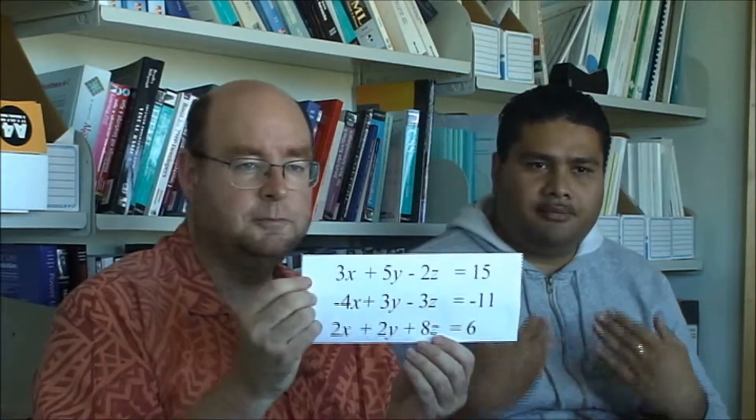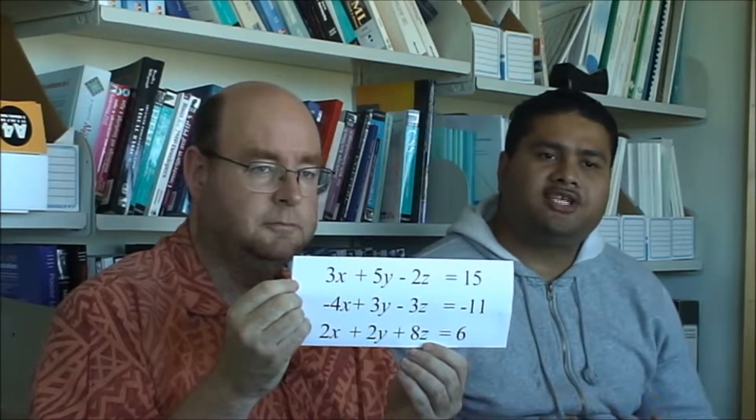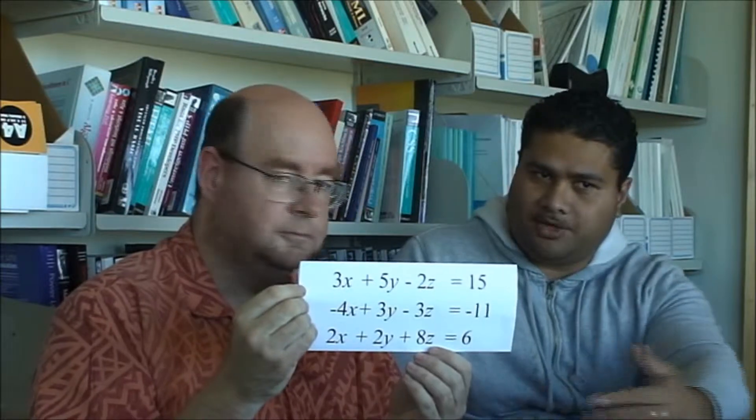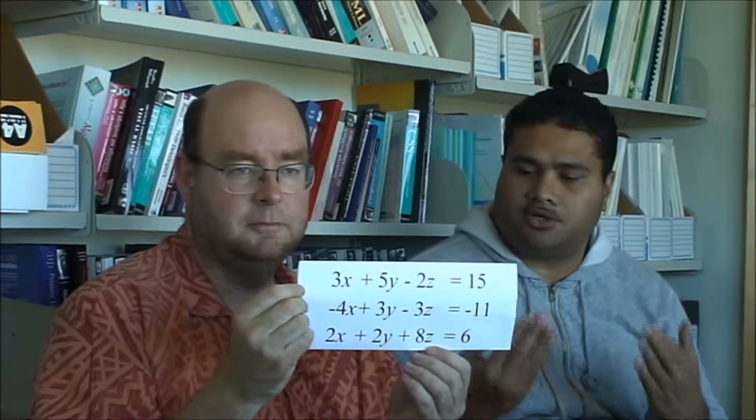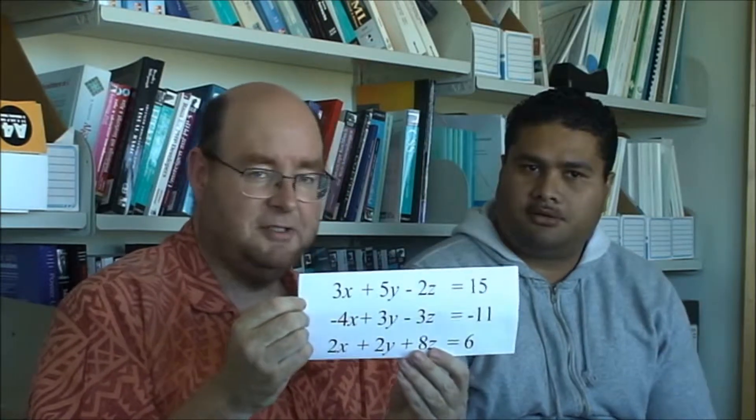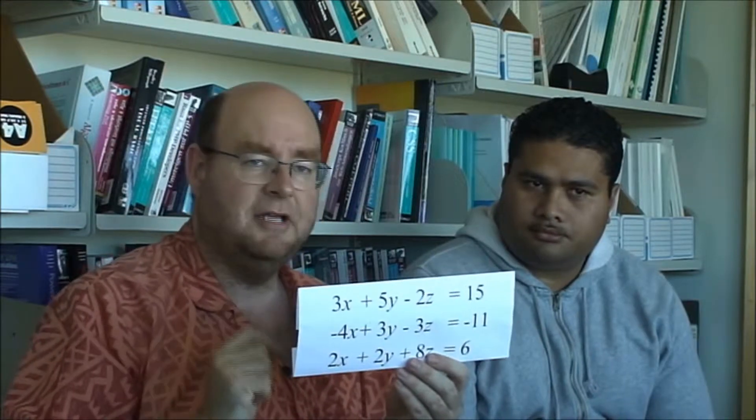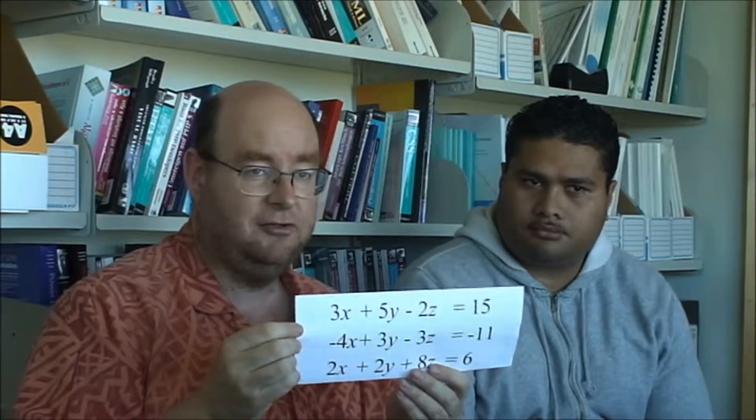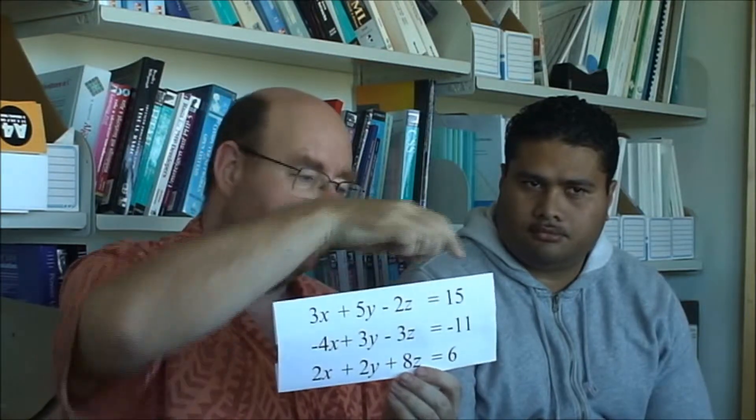The way network-coded TCP works is based on simple high school maths, sets of linear equations. Maybe you remember having to solve them at school, three equations with three unknowns, like this one here, or four equations with four unknowns, and so on. Each equation multiplies each unknown variable, like x, y, and z here, with a number called a coefficient, like the 3, 5, and minus 2 here, and then adds all those products up.